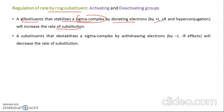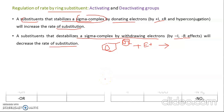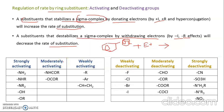Since the transition state structure closely resembles the sigma complex, stabilizing the sigma complex also stabilizes the transition state. Such substituents are known as activating groups. Substituents that destabilize the sigma complex by withdrawing electrons — through -I or -R effect — decrease the rate and are called deactivating groups. We have made a table showing which groups are activating, moderately activating, and weakly activating.